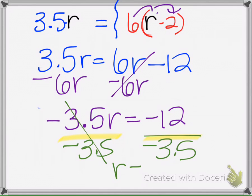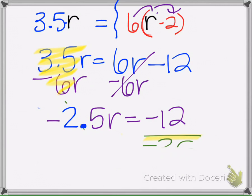And we get R equals, alright, I just noticed I had a mistake right here. 3.5 right here minus 6, did that in my head incorrectly, that should be 2.5. So instead of dividing by 3.5, we're dividing by negative 2.5.